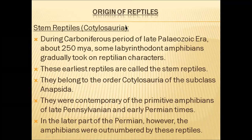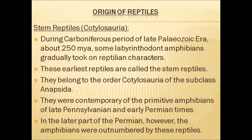Stem reptiles are called cotylosaurs. During the Carboniferous period of the late Paleozoic era, about 250 million years ago, some labyrinthodont amphibians gradually took on reptilian characters. These earliest reptiles, called cotylosauria, belong to the order Cotylosauria of the subclass Anapsida and had an anapsida skull. They were contemporary to primitive amphibians of late Pennsylvanian and early Permian times. In the later part of the Permian period, the amphibians were outnumbered by these reptiles.